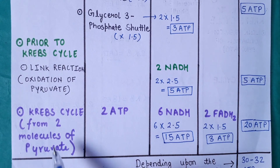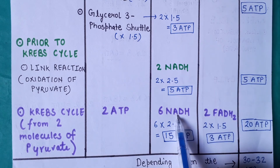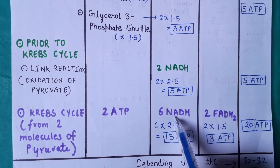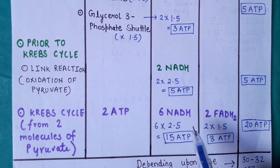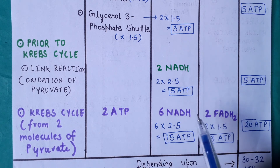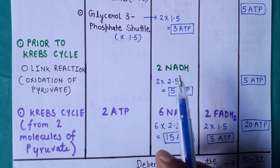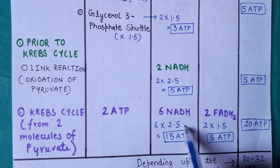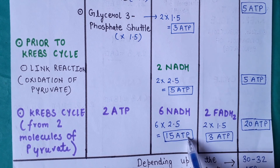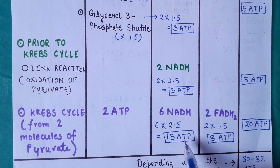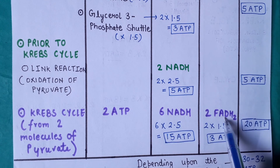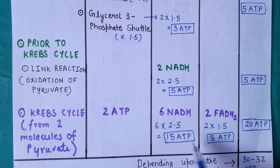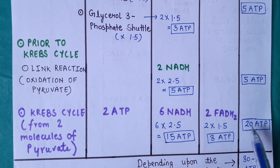In the Krebs cycle, for two turns, there is a net gain of 2 ATP, 6 NADH, and 2 FADH2. Six molecules of NADH multiplied by 2.5 ATP gives 15 ATP. Two molecules of FADH2 multiplied by 1.5 gives 3 ATP. Adding these with the 2 ATP gives a net gain of 20 ATP from the Krebs cycle.